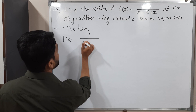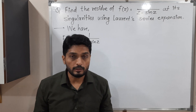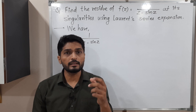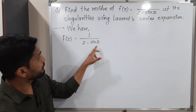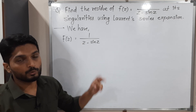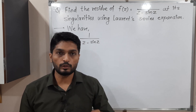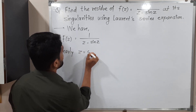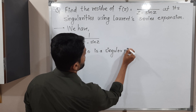The given function is f(z) = 1/(z − sin z). Singularity means a point where the function is not analytic. Simply put, if the denominator becomes zero at some point, that is a singularity. If we put z = 0: sin(0) = 0, so denominator = 0 − 0 = 0. Therefore z = 0 is clearly a singular point.